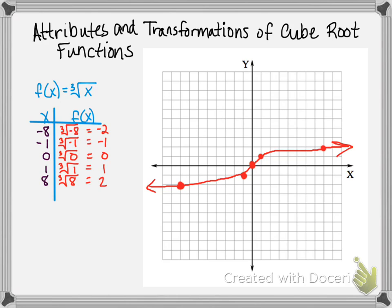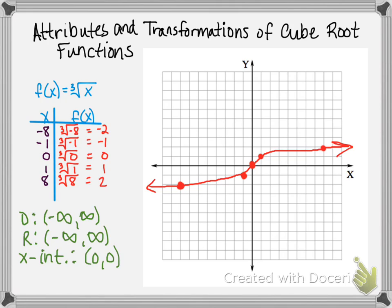Some attributes of this function are that the domain is all real numbers, or x values range from negative infinity to positive infinity. The range is also all real numbers, or y can range from negative infinity to positive infinity. The x-intercept is the origin, (0, 0), and the y-intercept is also the origin, (0, 0).